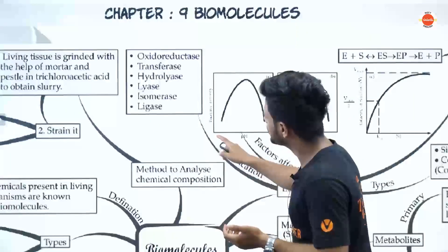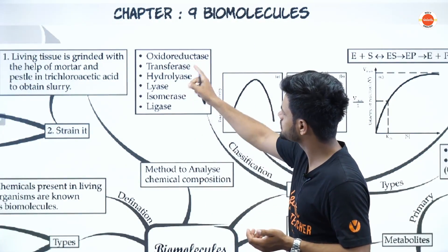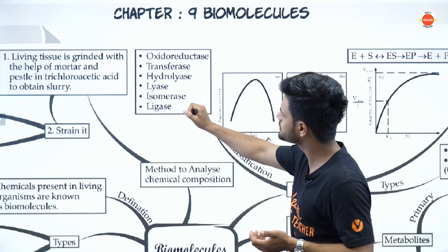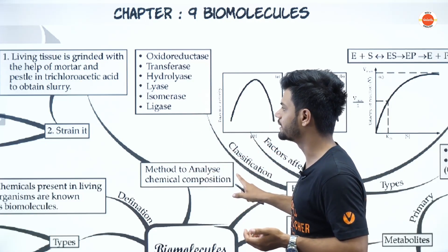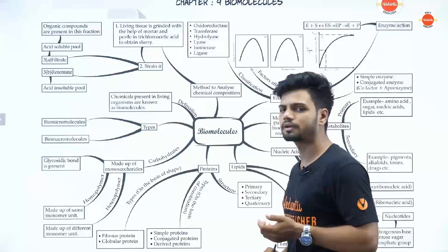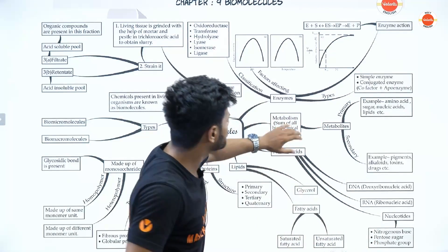Then we have the classification of enzymes: oxidoreductase, transferase, hydrolase, lyase, isomerase, and ligase. An example for each one is very important to know.